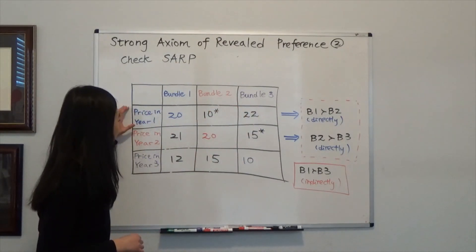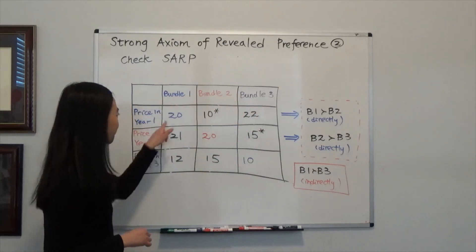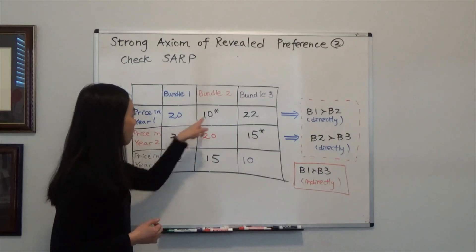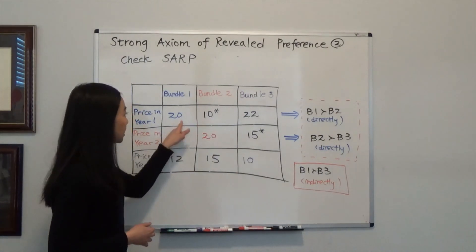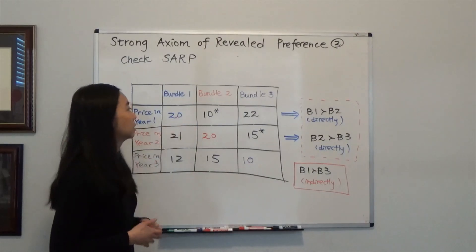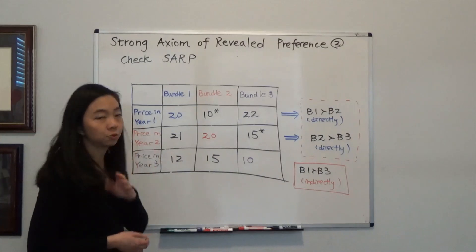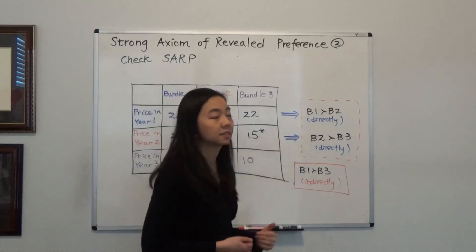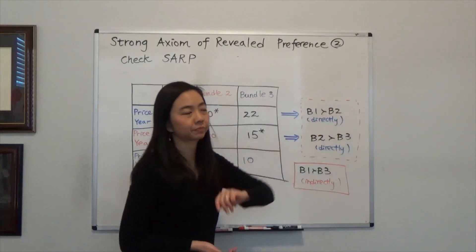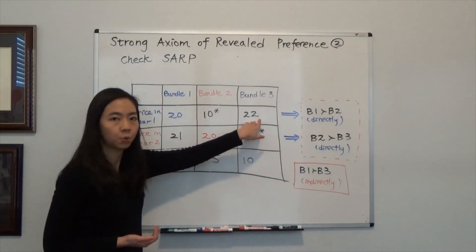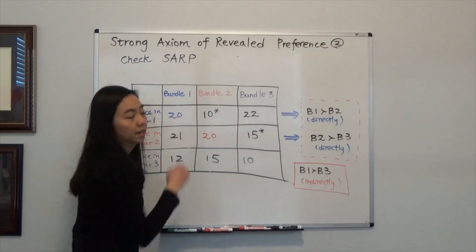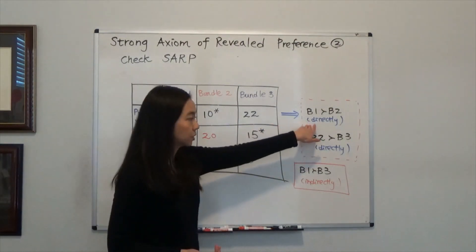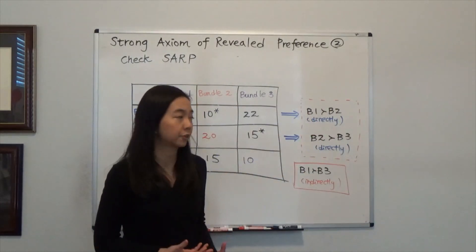Let's first take a look at the data in year one. We know in year one we purchased bundle one, and we did not purchase bundle two or bundle three. We can see that the cost of bundle two is $10, which is lower than $20, the bundle we actually purchased. So bundle two was affordable in year one, but we did not buy it. That tells us that we prefer bundle one to bundle two, and we say bundle one is directly revealed preferred to bundle two. Can we say anything about bundle three? No, we cannot, because bundle three was not affordable in year one. When something is not affordable, it doesn't say anything about your preference. So that's the only conclusion from year one: bundle one is directly revealed preferred to bundle two.